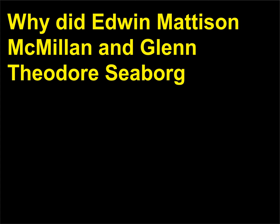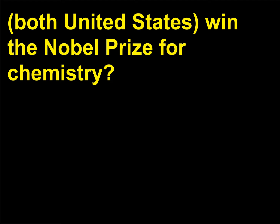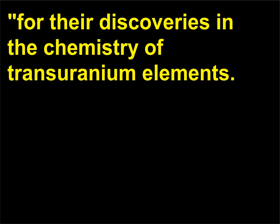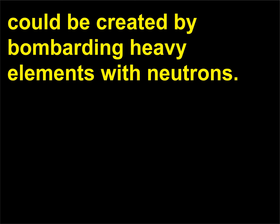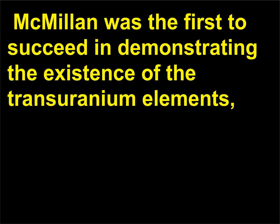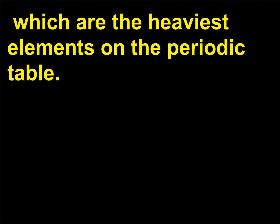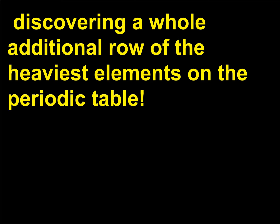Why did Edwin McMillan and Glenn Theodore Seaborg, both United States, win the Nobel Prize for Chemistry? For their discoveries in the chemistry of transuranium elements. Back in 1934, Fermi discovered that heavier elements could be created by bombarding heavy elements with neutrons. McMillan was the first to succeed in demonstrating the existence of the transuranium elements, which are the heaviest elements on the periodic table. Seaborg expanded on this work, discovering a whole additional row of the heaviest elements on the periodic table.